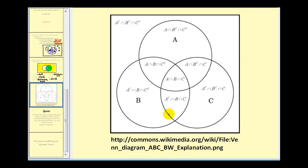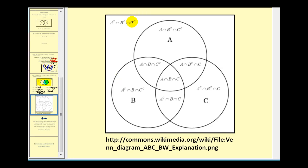I want to finish by showing this Venn diagram, which illustrates notation for the intersection of three sets within a universal set. A superscript C is another way to denote the complement of A, so B superscript C is the complement of B, and C superscript C is the complement of C. I hope you found these examples helpful — thank you for watching.